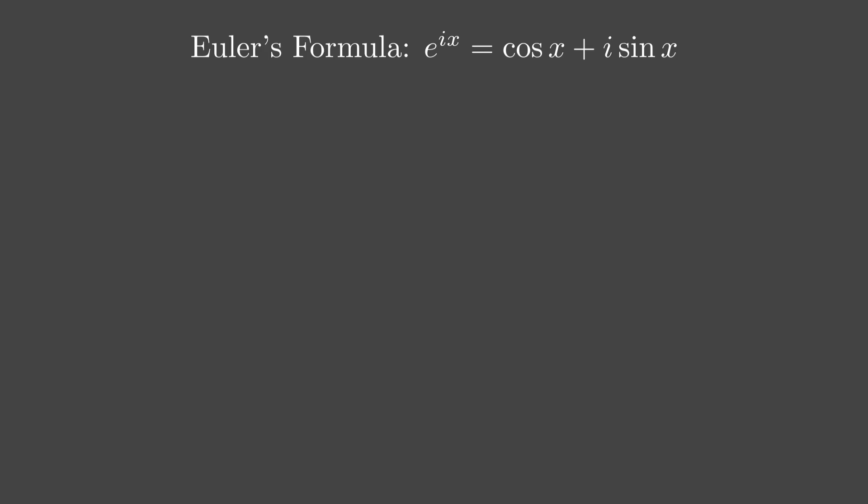A title appears on the screen, bold and clear: Euler's formula, e to the ix equals cos x plus i sine x. It's like the headline of our adventure, setting the stage for what's to come.